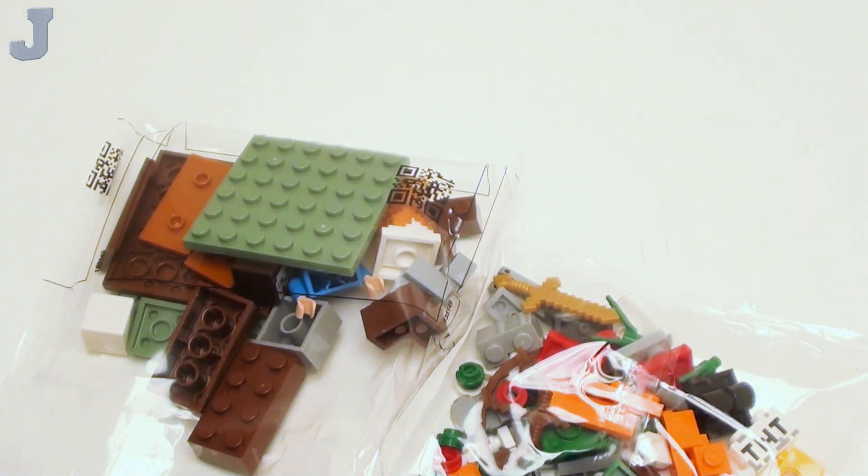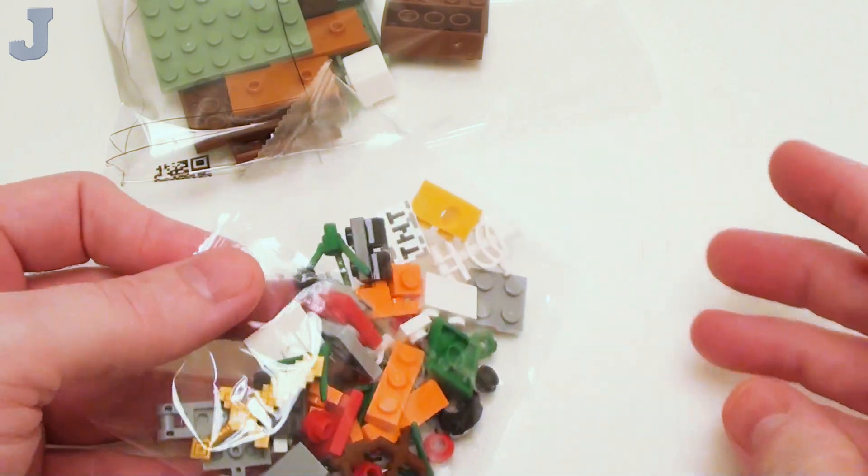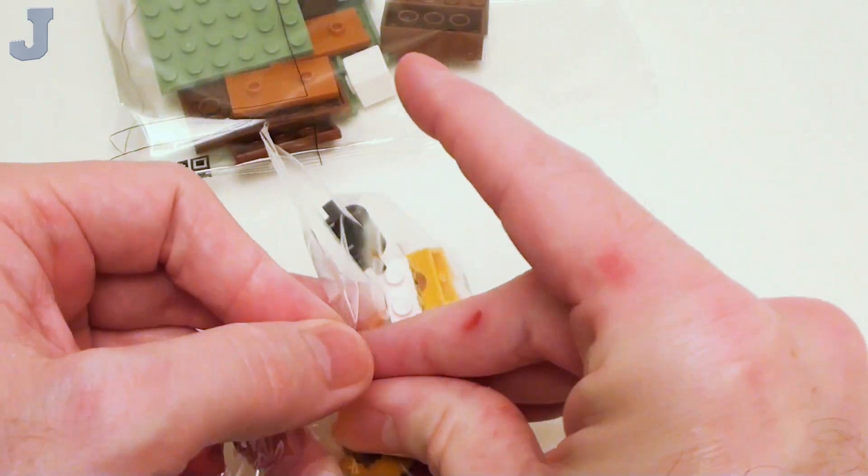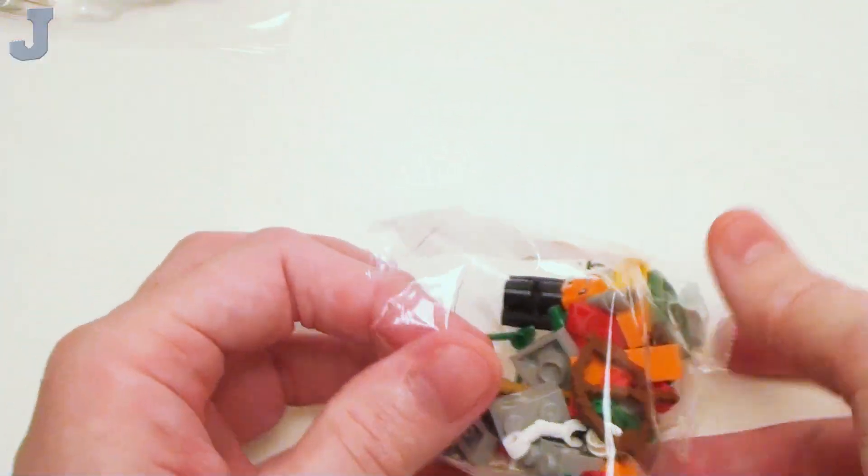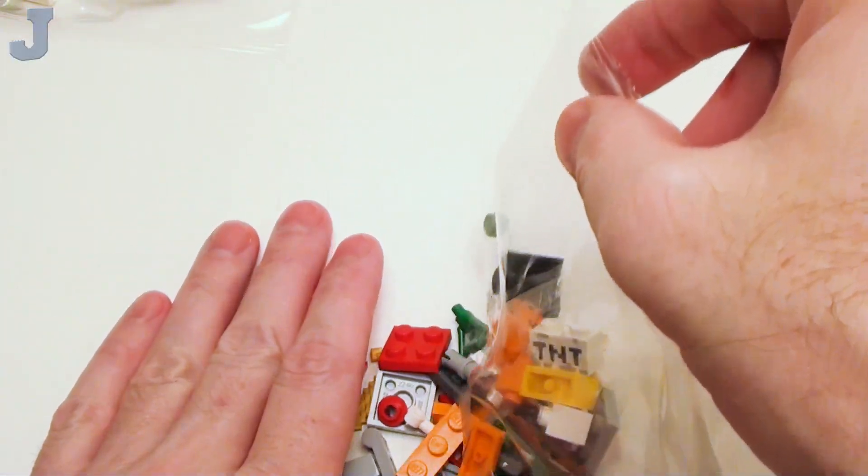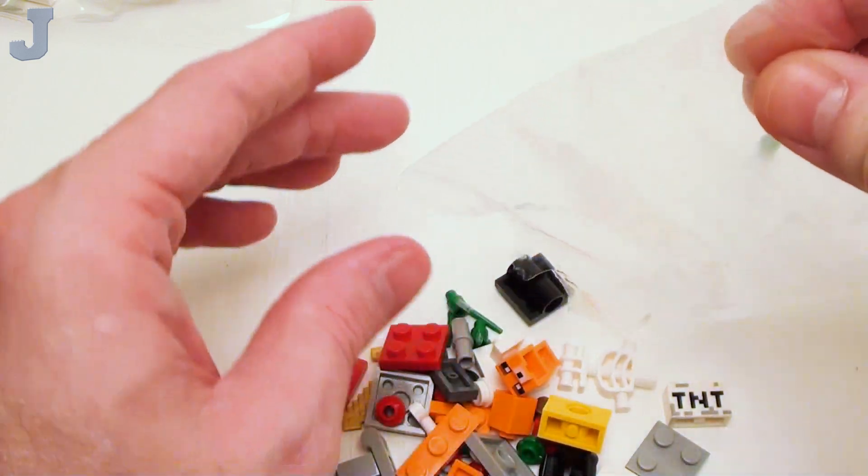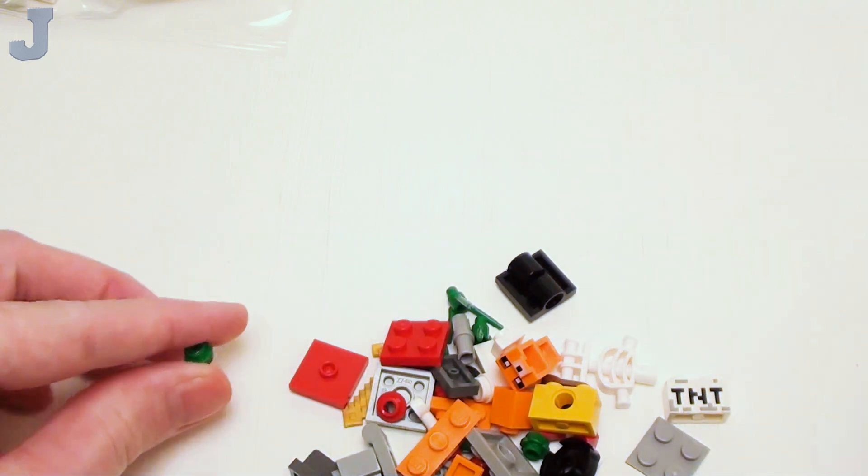We got two bags of bricks and a small instruction manual. Let's take a look at the parts. We're going to start with the little bag first. Obviously unnumbered, so we're just going to have to go with this. Looks like we get a bunch of things that like to roll off.